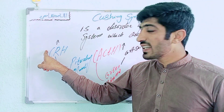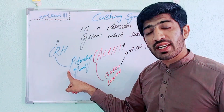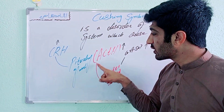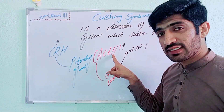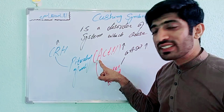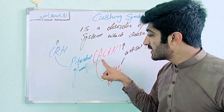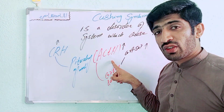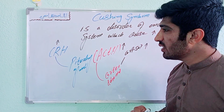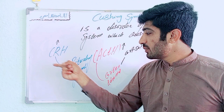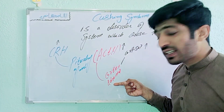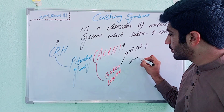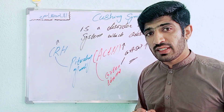If CRH is normal but there is a problem in the pituitary gland — such as a tumour — the pituitary gland secretes a very large amount of ACTH, which stimulates the cortex region to produce excess cortisol. Alternatively, if the hypothalamus and pituitary gland are both normal but there is a problem in the adrenal gland, cortisol levels may also increase, with a very large amount of cortisol secreted from the adrenal gland.